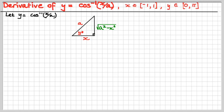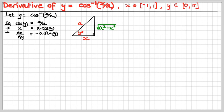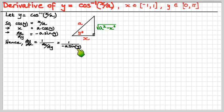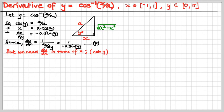We do exactly the same analogous procedure. We know that cos of y equals x over a, therefore x is a cos y, and dx/dy will be minus a sin y, because the derivative of cos is minus sin. Now dy/dx is 1 over dx/dy, which gives us 1 over minus a sin y. We want this in terms of x, so we go to the magic triangle again and ask: what is sin of y? It's this over that.